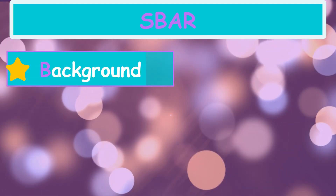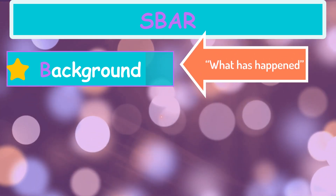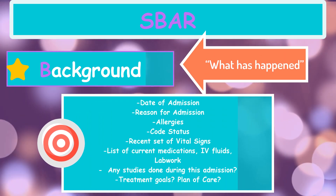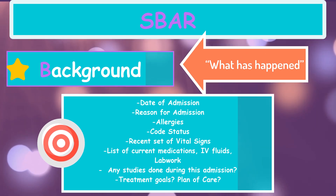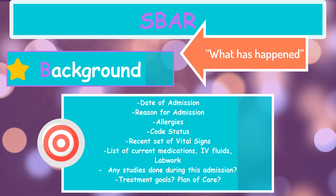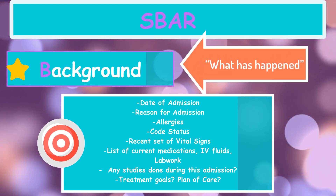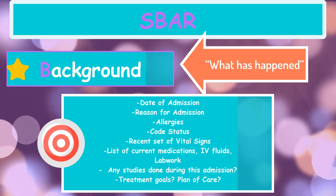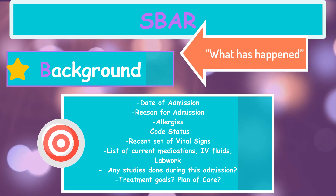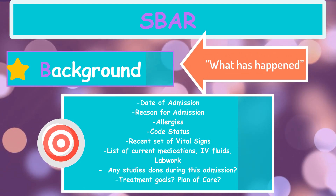Background is the B in SBAR. Here you're going to state what has happened to this patient during this admission. This includes the date of admission, why they were admitted, any allergies, code status — whether they are a DNR or full code — a recent set of vital signs, current medications, IV fluids, any lab work drawn, and any studies such as a chest x-ray or CAT scan. Also state the treatment goals or plan of care — for example, whether the patient is going to a rehab facility for physical therapy as opposed to going home.